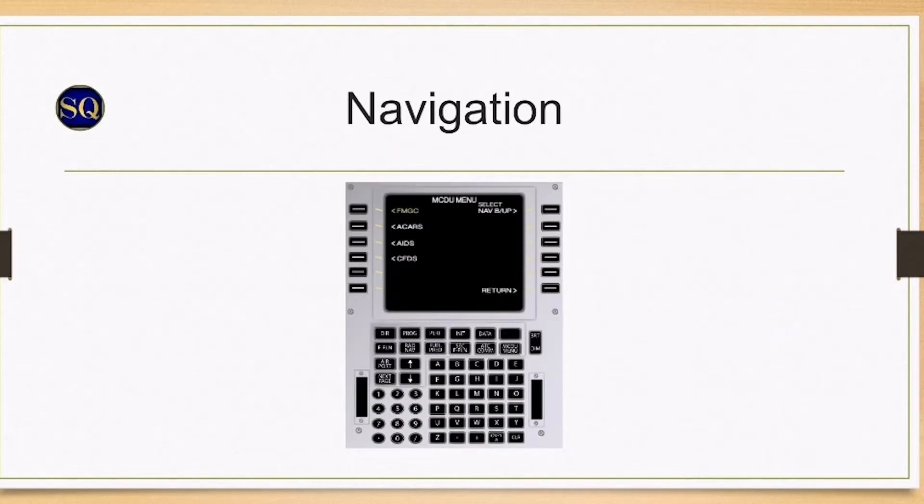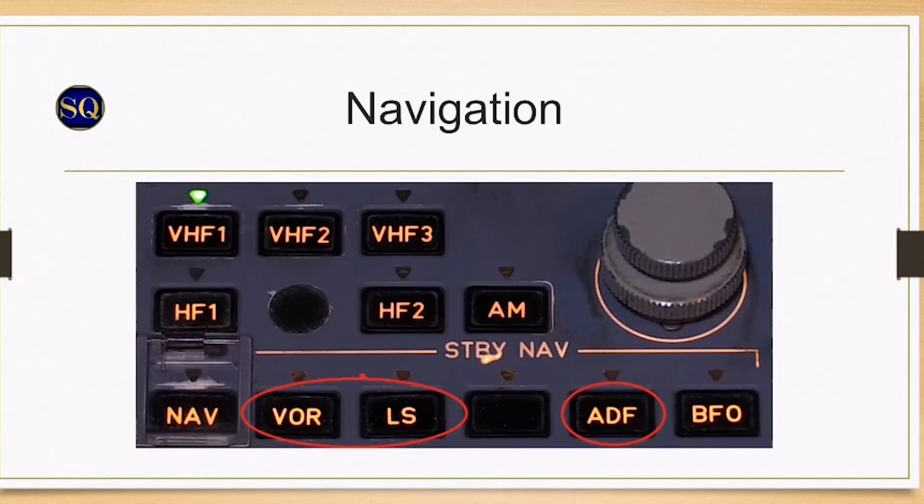FMGC1 is lost temporarily. It can be regained by flight crew passing through the MCDU menu page. Navigation: only ILS 1, DME 1, ADF 1, and VOR 1 remains available.